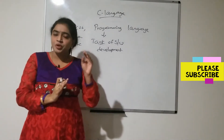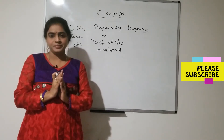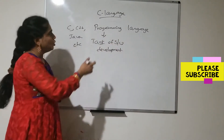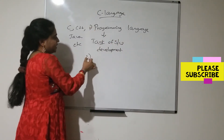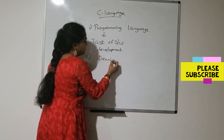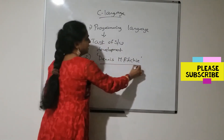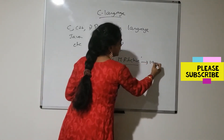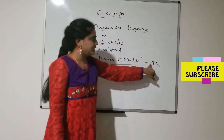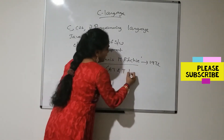Which programming language we have to choose depends upon our requirement. C is a programming language. Who introduced C language? C was developed by Dennis M. Ritchie. He introduced the C language in the year 1972 at AT&T Bell Laboratories.